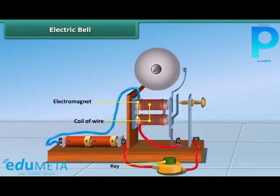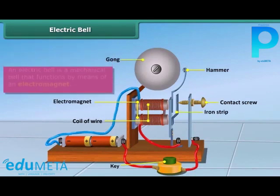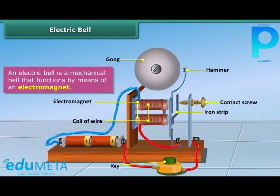Let us now look at the working of an electric bell. It functions by means of an electromagnet. The electric bell consists of a coil of wire wound on an iron piece; the coil acts as an electromagnet. An iron strip with a hammer at one end is kept close to the electromagnet. There is a contact screw near the iron strip. When the iron strip is in contact with the screw, the current flows through the coil, turning it into an electromagnet. It then pulls the iron strip, and the hammer at the end of the strip strikes the gong of the bell to produce sound.